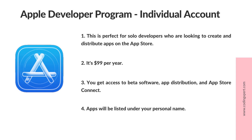First up, we have the Individual Developer Account under the Apple Developer Program. This is perfect for solo developers who are looking to create and distribute apps on the App Store. Here are a few things to keep in mind: it's $99 per year, you get access to beta software, app distribution, and App Store Connect, and apps will be listed under your personal name. If you're just starting out as a developer, this is probably the most straightforward option for you.